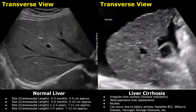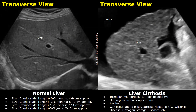In children, liver cirrhosis can occur due to biliary atresia, hepatitis B or C, Wilson's disease — in which there is copper buildup in the liver — glycogen storage diseases, and various other causes. On ultrasound, irregular liver surface or surface nodularity will be seen, the liver will have a heterogeneous appearance, and cirrhosis can also cause ascites with anechoic fluid surrounding the liver.